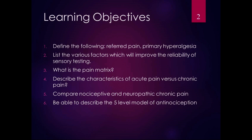I want you to know what the pain matrix is. I want you to be able to describe the characteristics of acute pain versus chronic pain, which we've already talked about in some previous classes. I want you to be able to compare nociceptive and neuropathic chronic pain. We're going to talk about nociceptive chronic pain in this chapter, and then in Chapter 12, neuropathic chronic pain. And I want you to be able to describe the five-level model of antinociception at the end of this chapter.